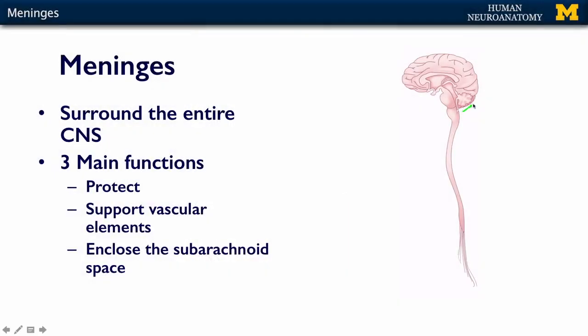Hello, in this segment we're going to talk about the meninges, which are the coverings that surround the entire nervous system. They surround the brain and the spinal cord all the way down, they go beyond the spinal cord and form something called the dural sac, and we'll talk a lot more about that when we talk about the spinal cord itself, but they cover the entire nervous system.